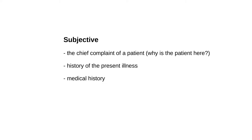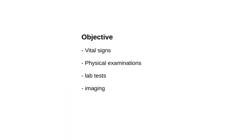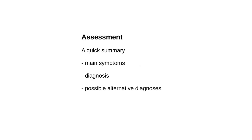Subjective consists of the chief complaint of a patient — the reason why the patient is here, usually in the patient's own words. It consists of the history of the present illness: when did it start, how did it change, what is the pain like, and of course the medical history of the patient. The objective component consists of vital signs, findings from physical examinations, lab tests, imaging, and so on.